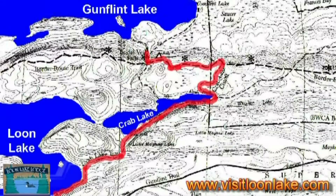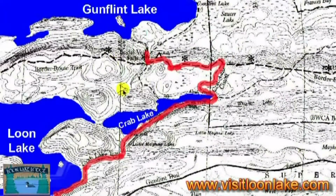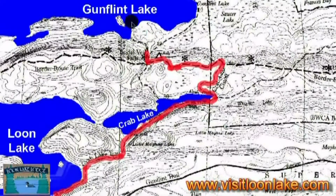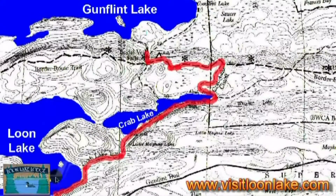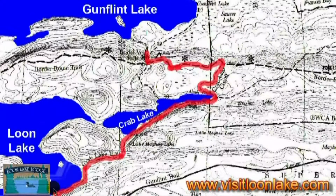This short video is going to explain how to get to Bridal Falls, which is up here between Crab Lake and Gunnard, from Loon Lake Lodge, which is down here in the lower left-hand corner.